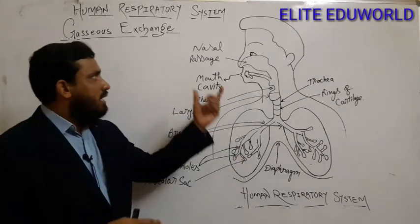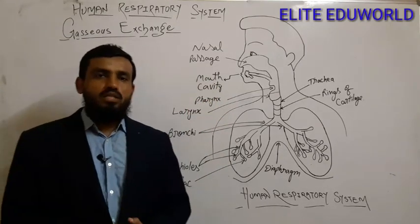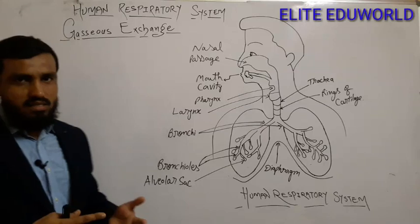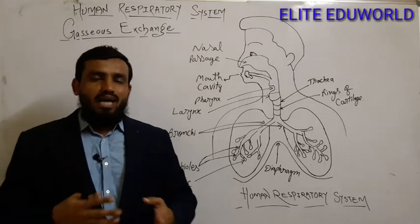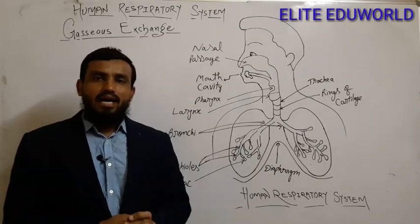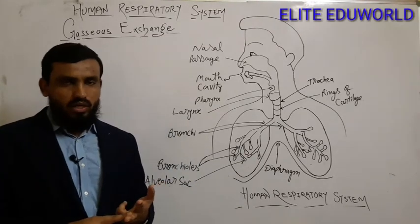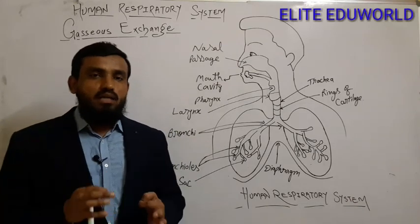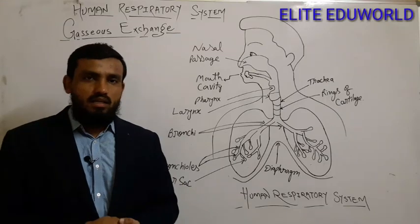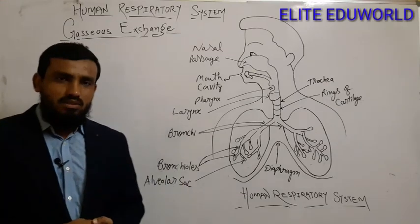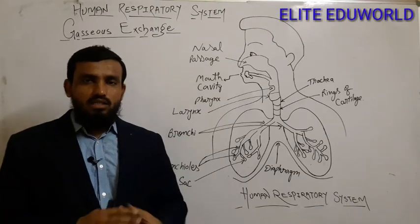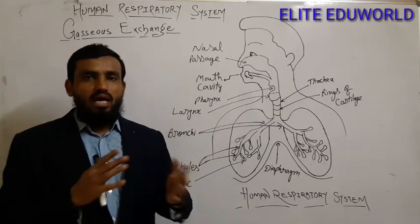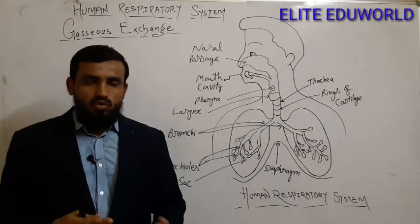We have already completed Part 1 on the human respiratory system — you will get the link in the description box. This is Part 2. In Part 1 we saw the types of respiration: basically 2 types — aerobic respiration and anaerobic respiration. We are aerobic organisms, so oxygen is a must requirement. But there are several organisms like yeast that can do anaerobic respiration — they can respire without oxygen.